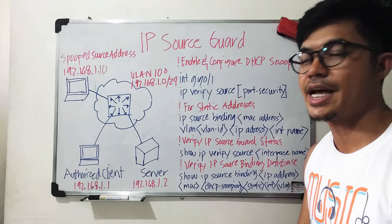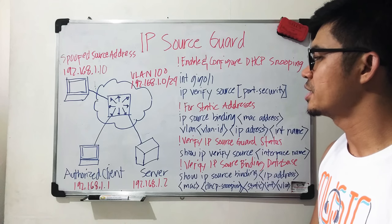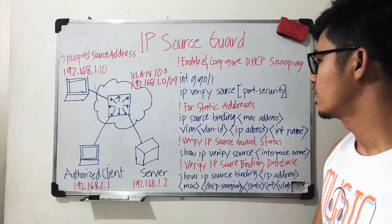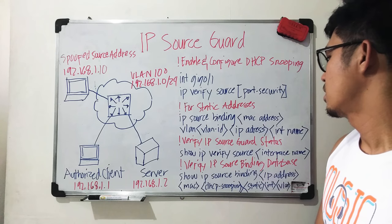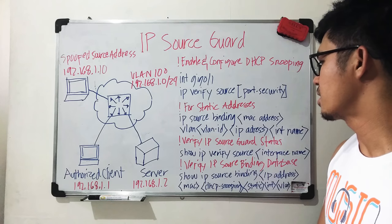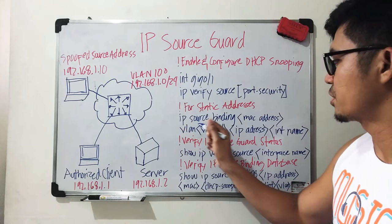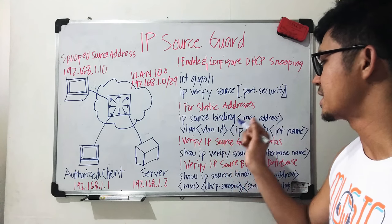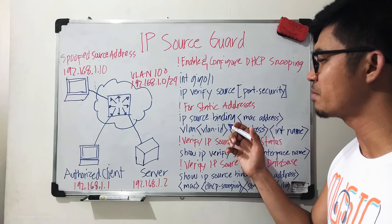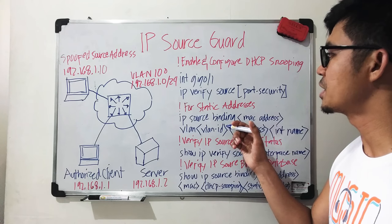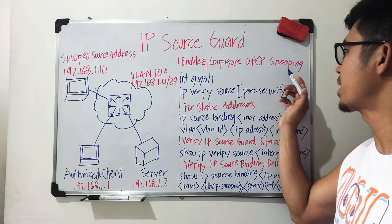What if a host is not using a DHCP service? You can actually configure the switch to manually bind the MAC address, IP address, VLAN ID, and interface. As you can see here, the command is 'ip source binding' followed by the MAC address, VLAN ID, IP address, and interface name. So basically you're doing it manually on the switch instead of having it done automatically via the DHCP snooping binding database.